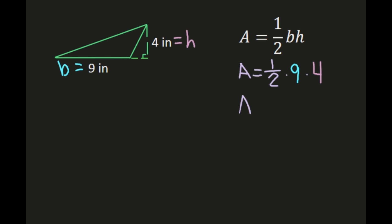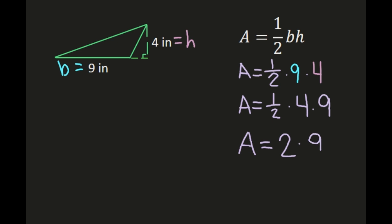You can multiply these numbers in whichever order you choose. One-half times 9 would give you a fraction, and you don't want to work with fractions if you don't have to. So I'm going to switch the order and multiply one-half times 4 first, thinking of it as one-half times 4 times 9. One-half times 4 is 4 divided by 2, which is 2. That leaves 2 times 9, which is 18. Working in inches, our area equals 18 inches squared.